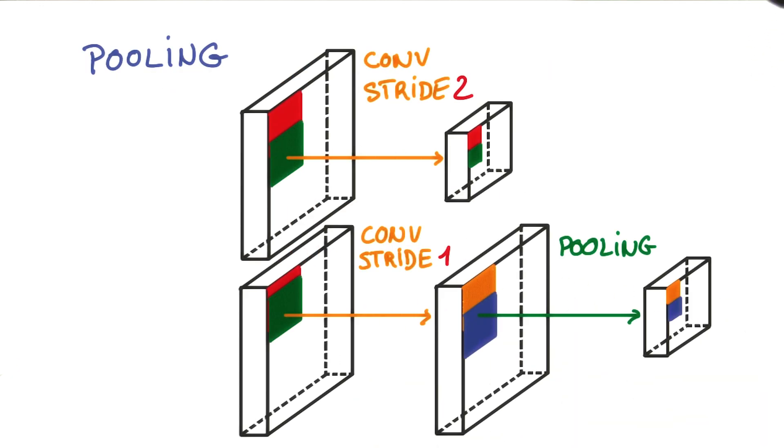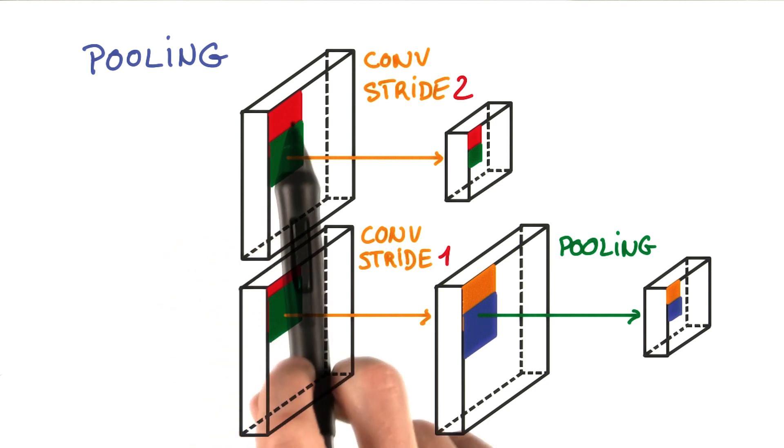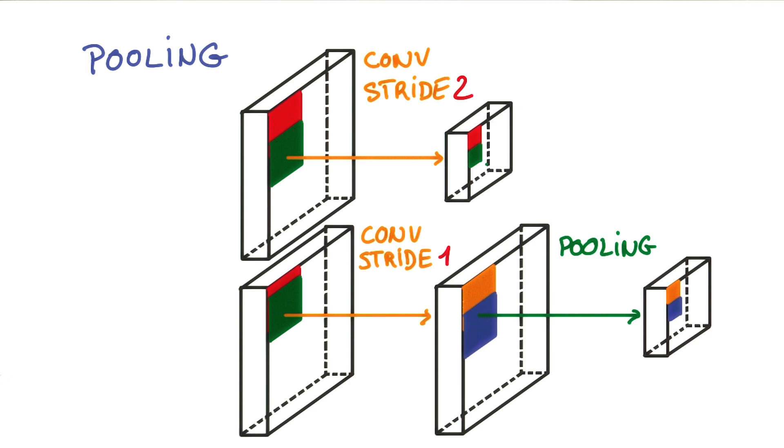The first improvement is a better way to reduce the spatial extent of your feature maps in the convolutional pyramid. Until now, we've used striding to shift the filters by a few pixels each time and reduce the feature map size. This is a very aggressive way to downsample an image. It removes a lot of information.